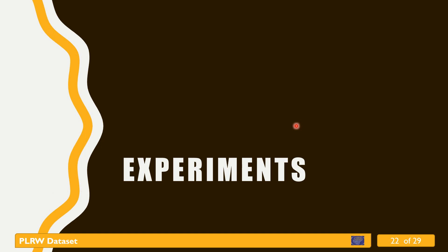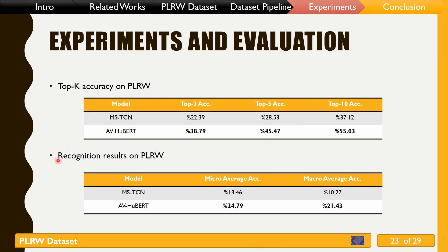In this section I'll describe our experiment results using two methods on our dataset. For MSTCN, we achieved about 14% micro-average accuracy. We also utilized the AV-HuBERT approach to create another baseline. Since word-level lip reading is a classification task, we used AV-HuBERT as a feature extractor — feeding input video to a pre-trained AV-HuBERT model to obtain an embedding vector for each frame, then passing these features to two linear layers. The average of logit values for each class was used to obtain probabilities.